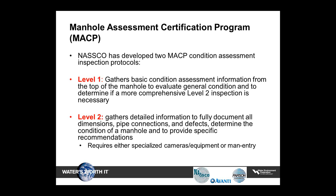With Level 1, we're trying to gather basic information from the top of the manhole — not entering the manhole — to get some basic information, including whether a Level 2 inspection is necessary. The Level 2 type of inspection allows us to gather more detailed information to fully document the dimensions, pipe connections, and defects within the manhole to make intelligent decisions on whether and what type of improvements or rehabilitation is necessary. Level 2 does require either specialized cameras and equipment or man entry.